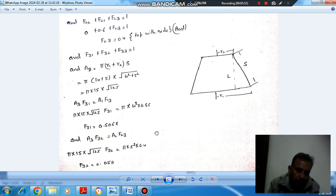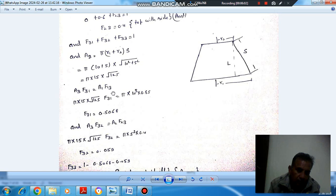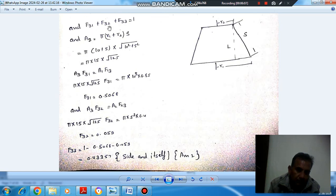Now by reciprocity, A3 F32 should be equal to A2 F23. F23 is 0.4, so F32 comes out as 0.05. Now putting the values here we can calculate F33.